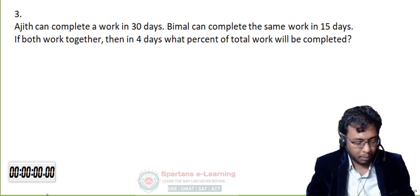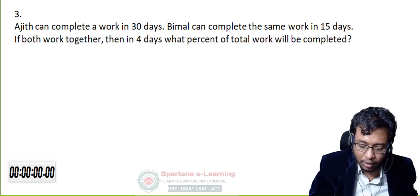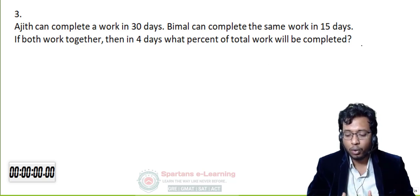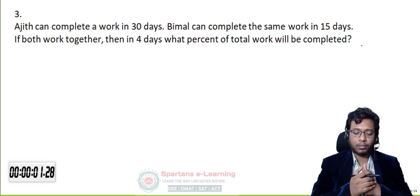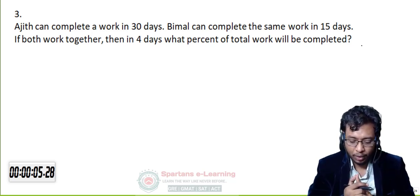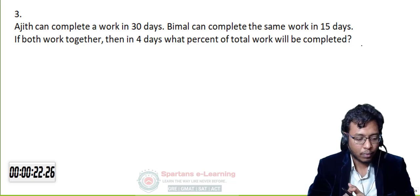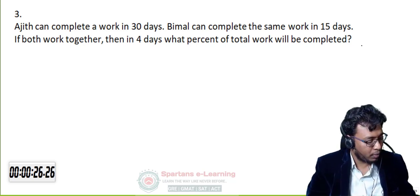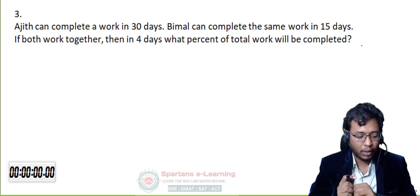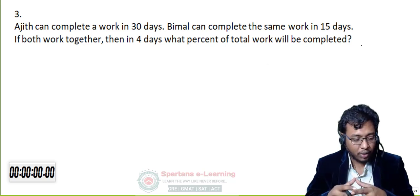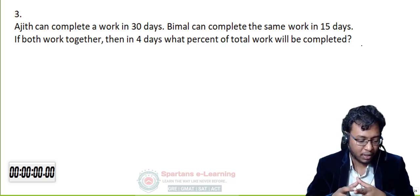Third question: Ajit can complete a work in 30 days, Bimal can complete the same work in 15 days. If both work together, then in 4 days what percent of the total work will be completed? Solving orally: 15 and 30, ratio is 1:2. A+B = 30 × 1/3 = 10 days. In 4 days they complete 4/10 × 100 = 40% of the work.